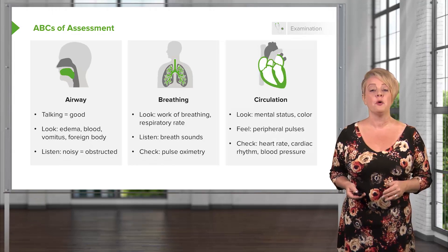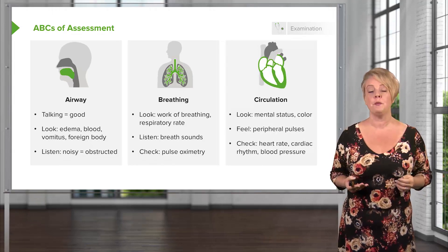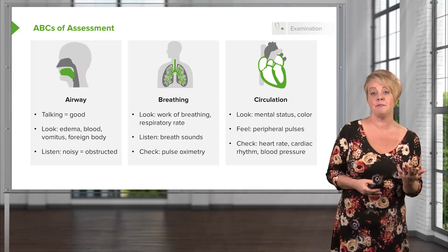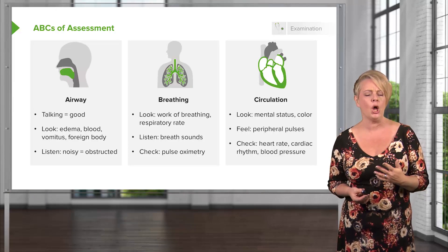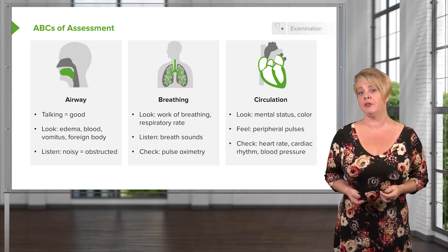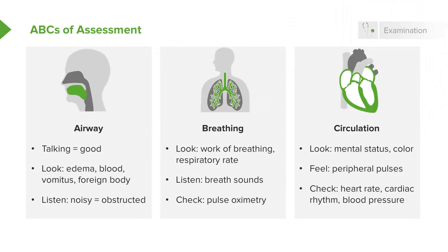Lastly, we want to check circulation. Part of circulation is just a general gestalt look at the patient. If the patient is maintaining well and they're nice and pink, that's a good sign they're perfusing their brain and body adequately. Whereas if they're pale, cyanotic, or altered, they may not be perfusing as well as we'd hope. We also want to feel peripheral pulses — a patient awake and talking obviously has a carotid pulse, but a weak or absent peripheral pulse tells us they may not be perfusing the periphery well. We also want to look at vital signs: heart rate, cardiac rhythm, and blood pressure all give important clues about the adequacy of circulation.